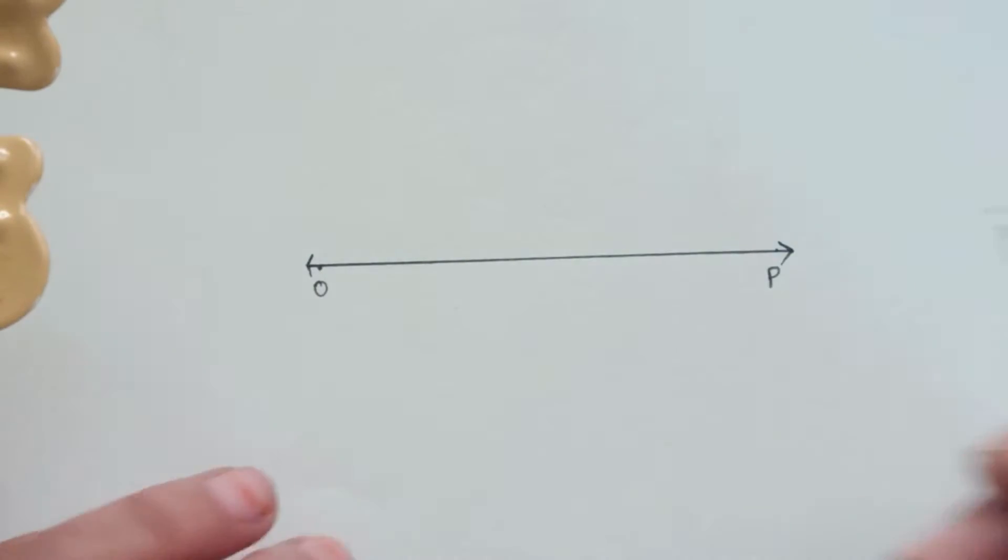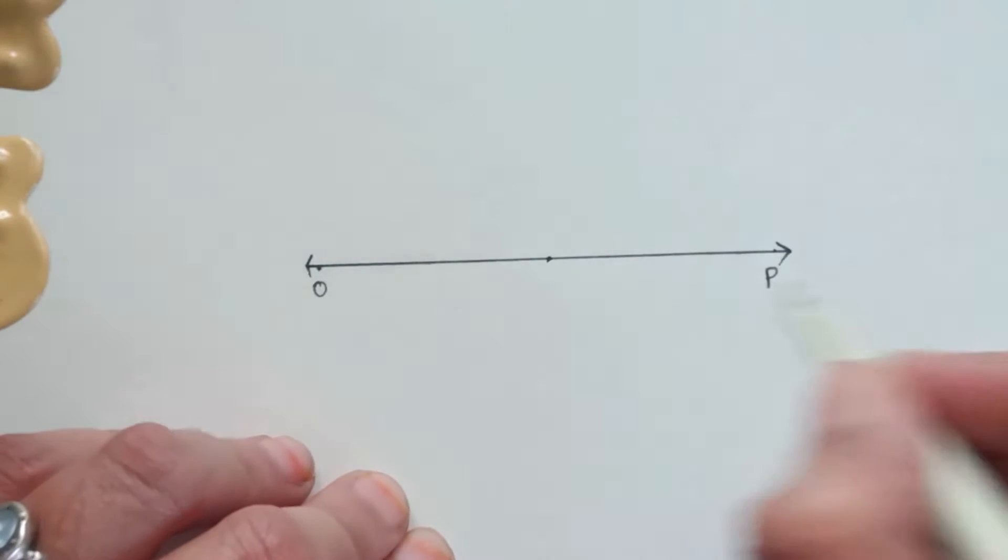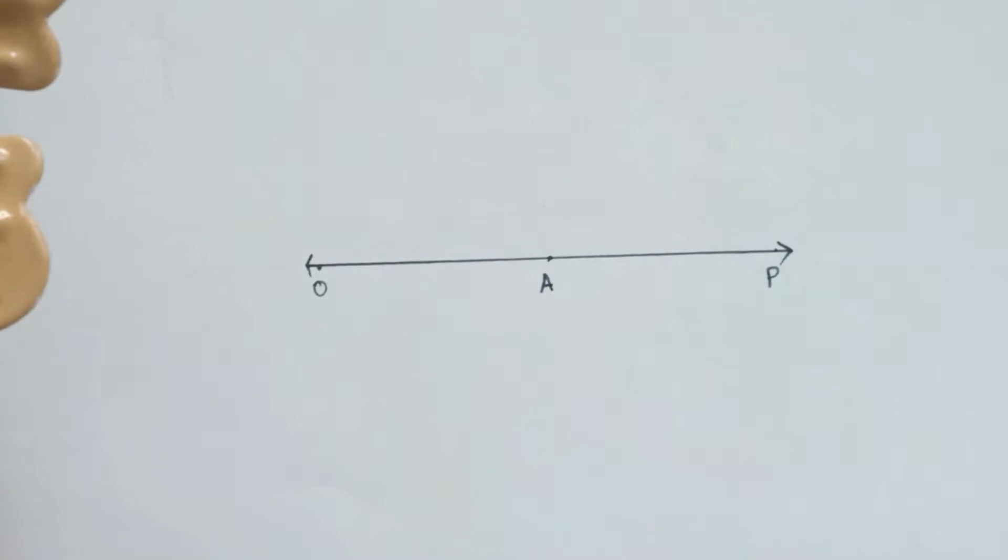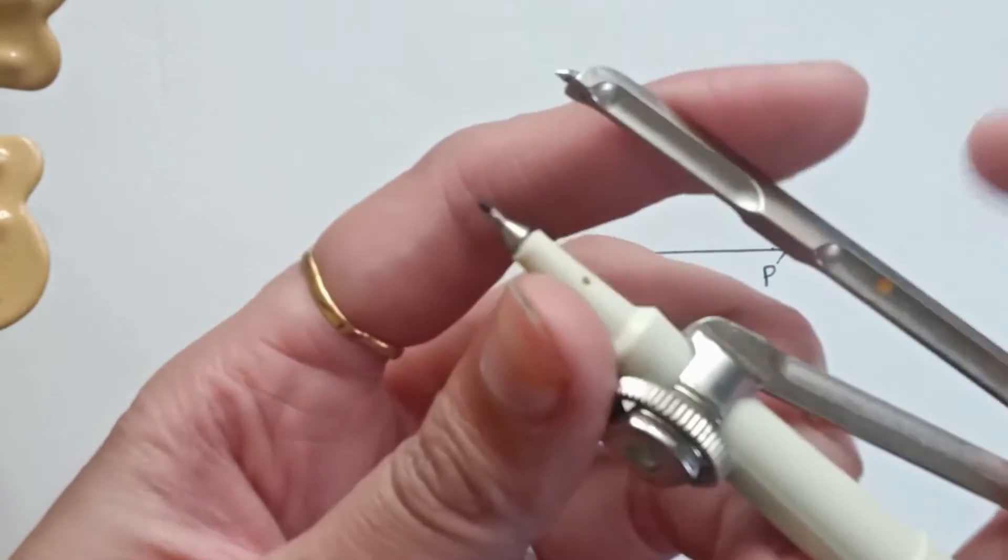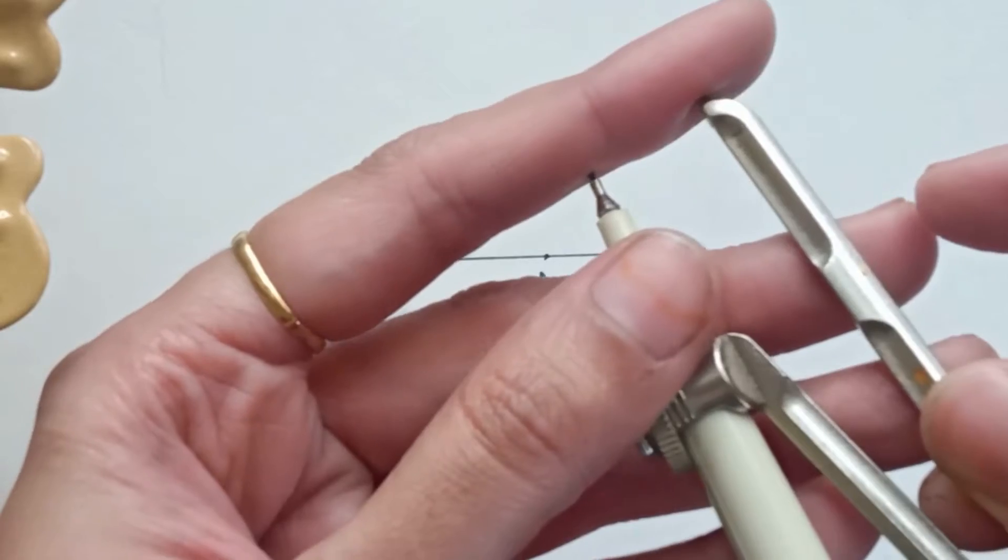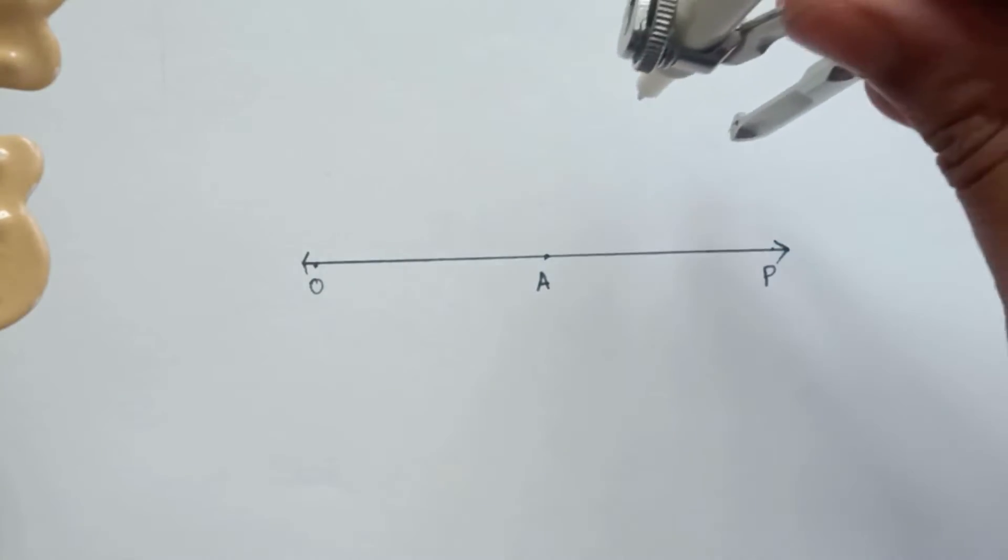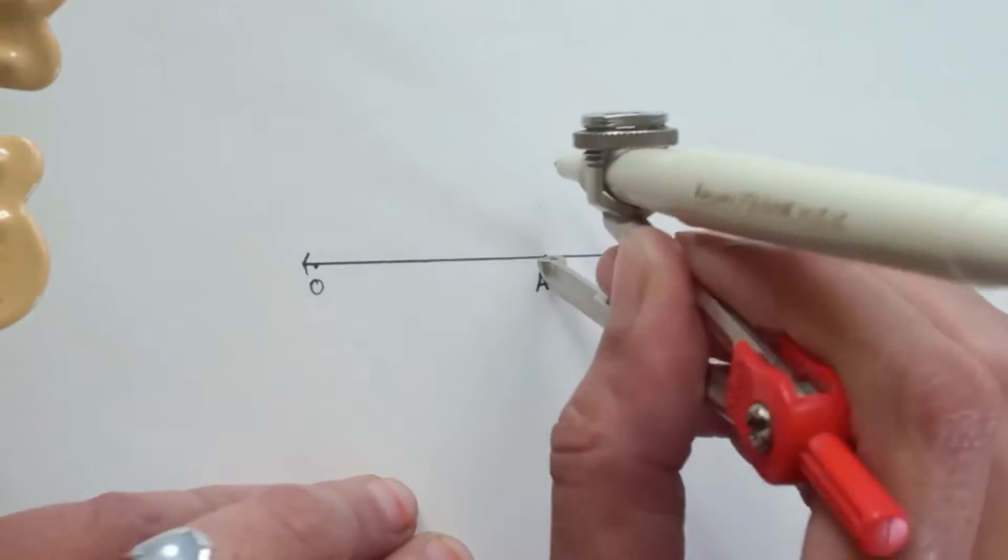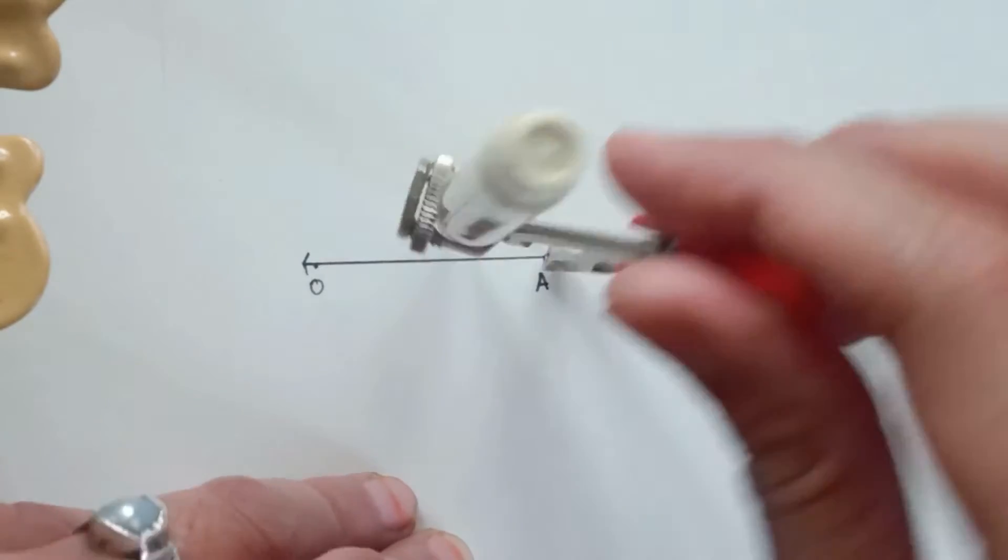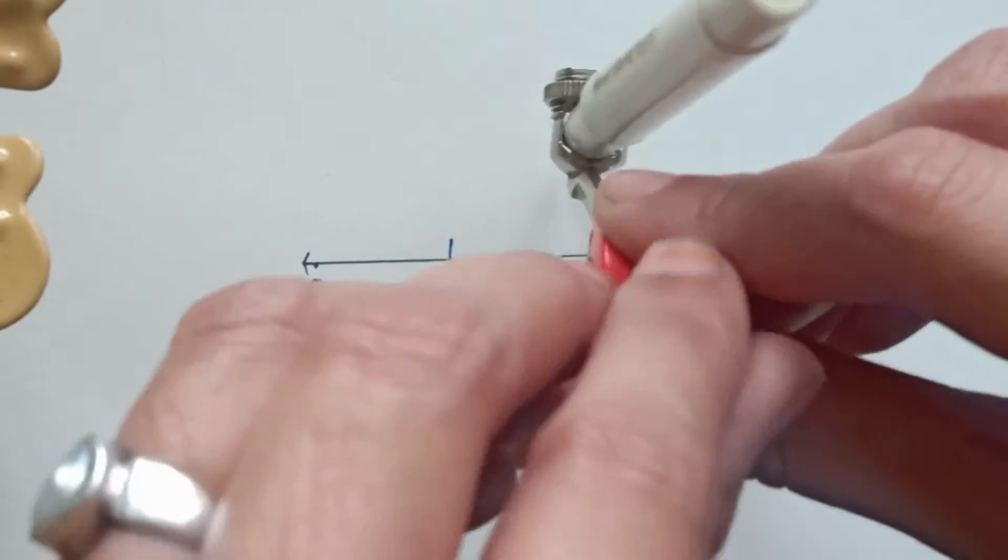We will name this line as OP. This is our basic horizontal line on which we are going to construct all these angles. So approximately we will mark a center point as A. Now take your compass, adjust your pen properly in the compass. Make sure both the points are touching your paper.